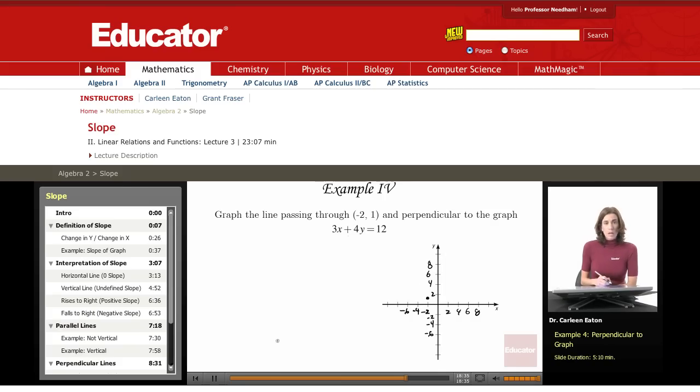Recall that the slopes of perpendicular lines, the product of those slopes is equal to negative 1. So the product of perpendicular lines m1 and m2, I have two perpendicular lines. The slope of one is m1, the other is m2, their product is negative 1.